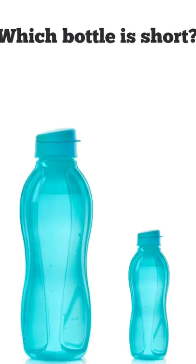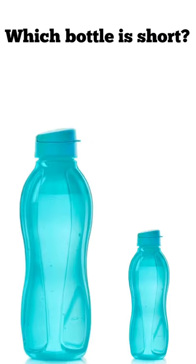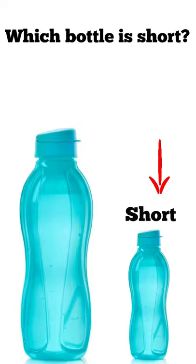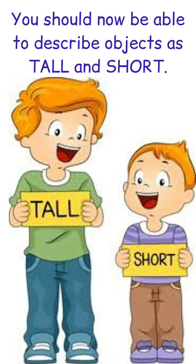Which bottle is short? If you said the bottle on the right is short, you are correct. Awesome. You should now be able to describe objects as tall and short.